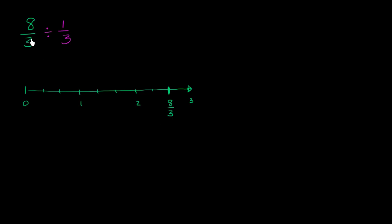Now, one way to think about 8 thirds divided by 1 third is what if we take this length and we say, how many jumps would it take to get there if we're doing it in jumps of 1 third? Or essentially, we're breaking this up. If we were to break up 8 thirds into sections of 1 third, how many sections would I have? Or how many jumps would I have? Well, let's think about that.